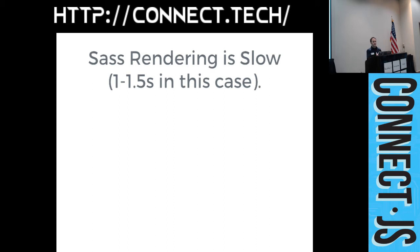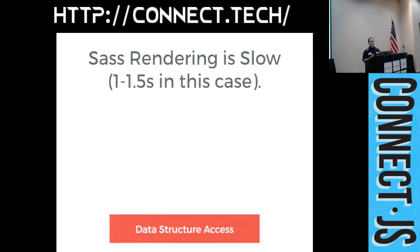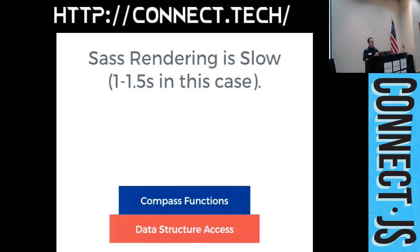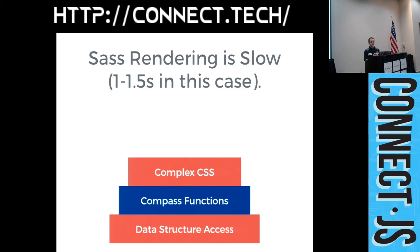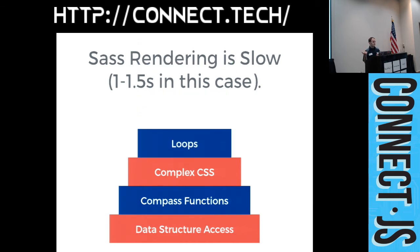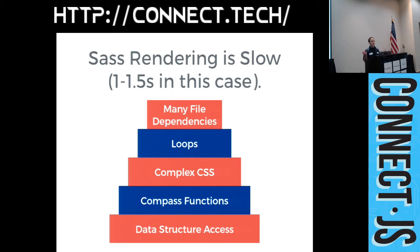The problem is Sass renders pretty slowly, especially with complex rules. We had a compounding effect: data structure access with lists and maps, usage of Compass for helper mixins and prefixing, complex CSS rules that had built up over time, loops iterating three or four times over that complexity, and lots of file dependencies — everything is modular and we're importing a lot. Sass also doesn't cache imports, so it re-imports and recompiles everything each time.